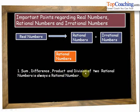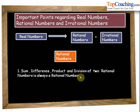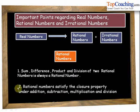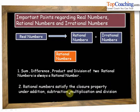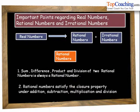The sum, difference, product and division of two rational numbers is always a rational number. So if we have two rational numbers and we add, subtract, multiply or divide them, the final result would always be a rational number. Rational numbers satisfy the closure property under addition, subtraction, multiplication and division.